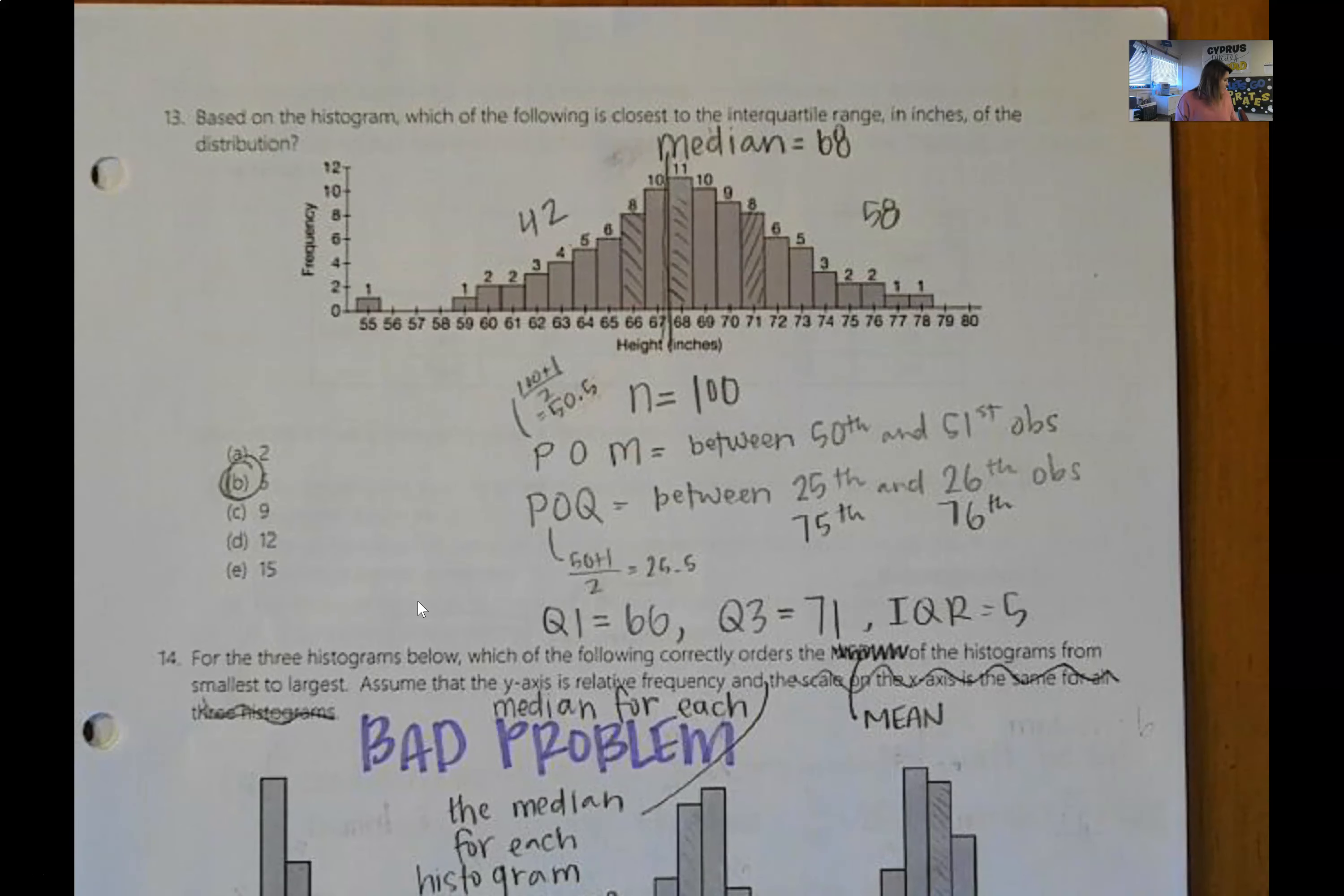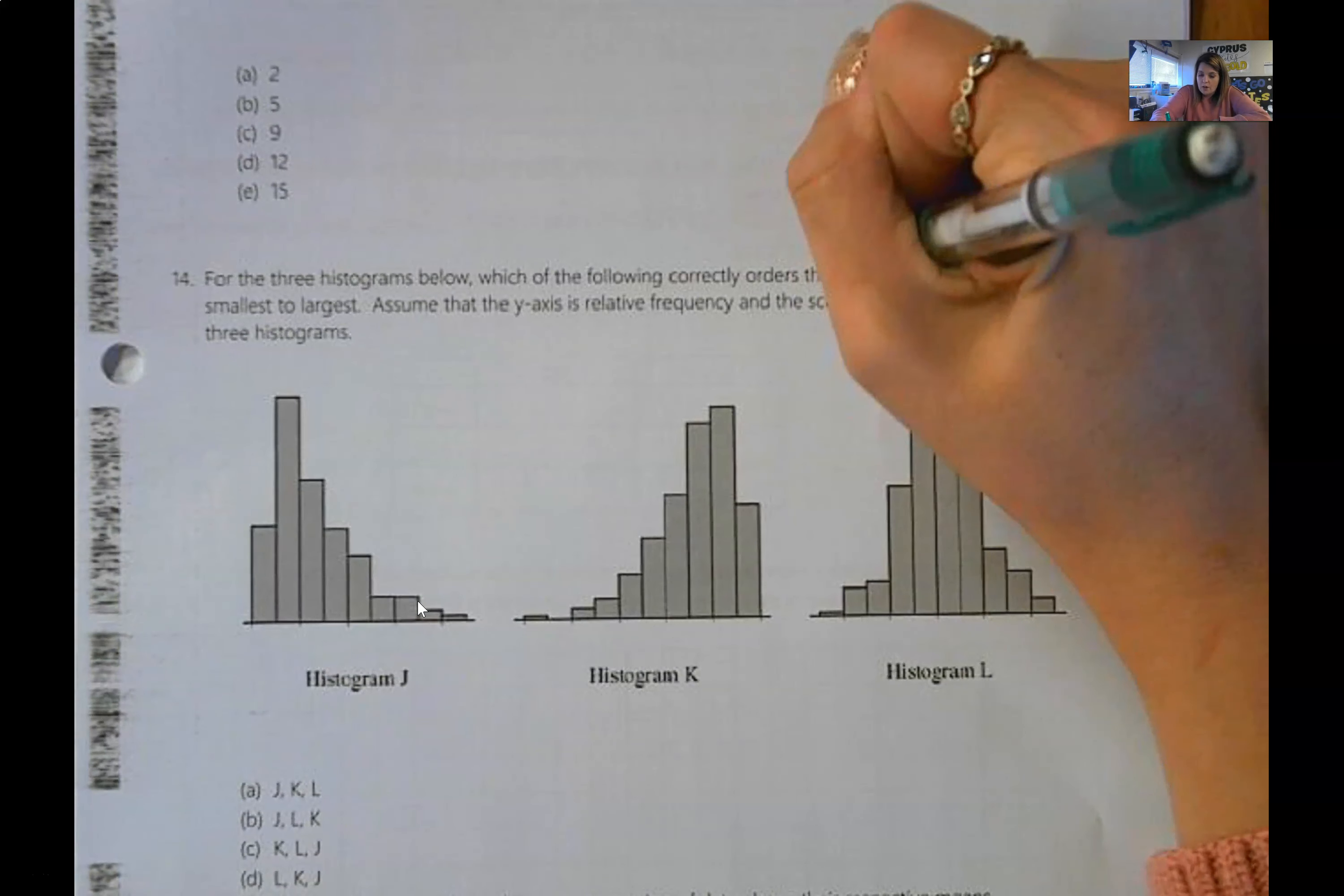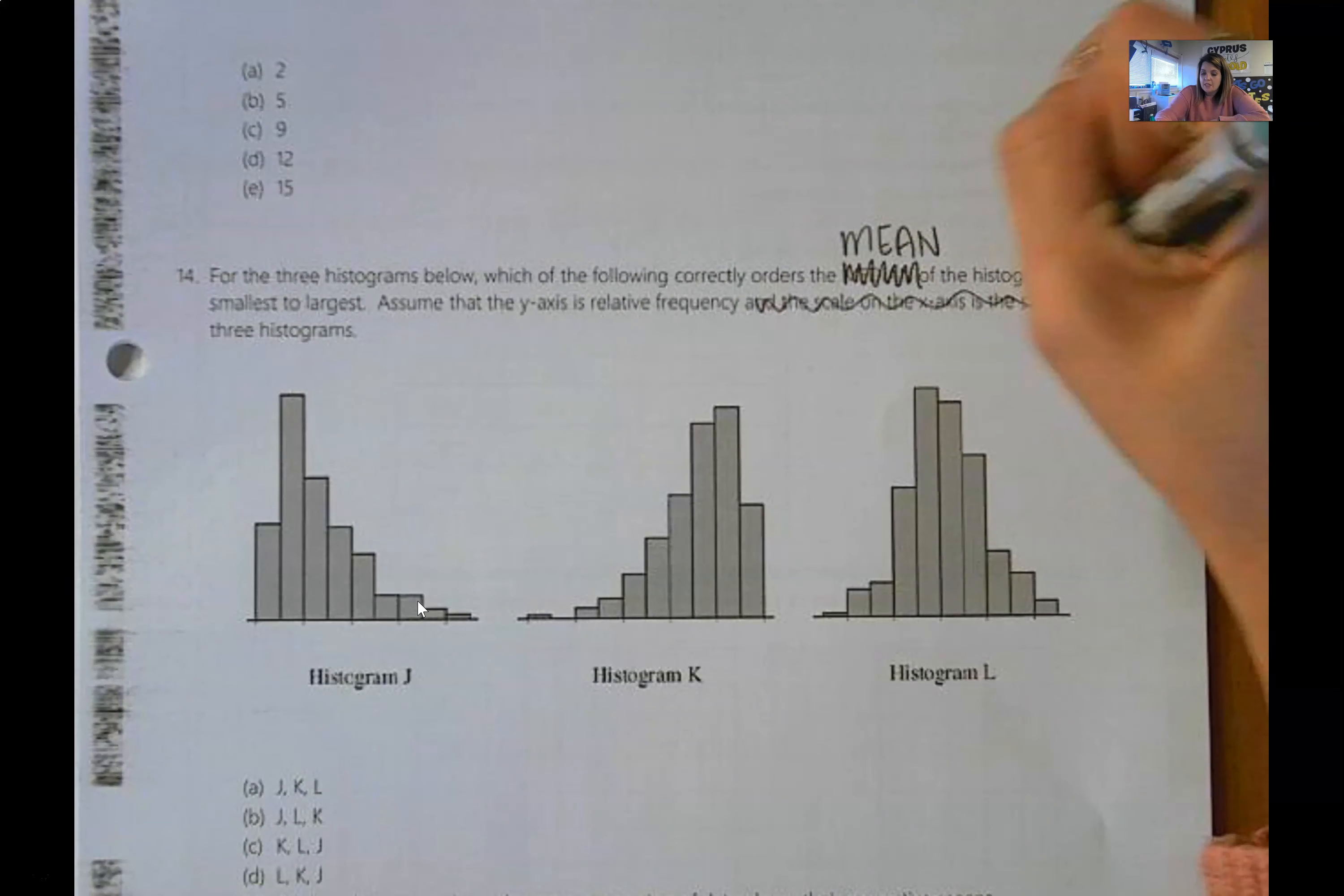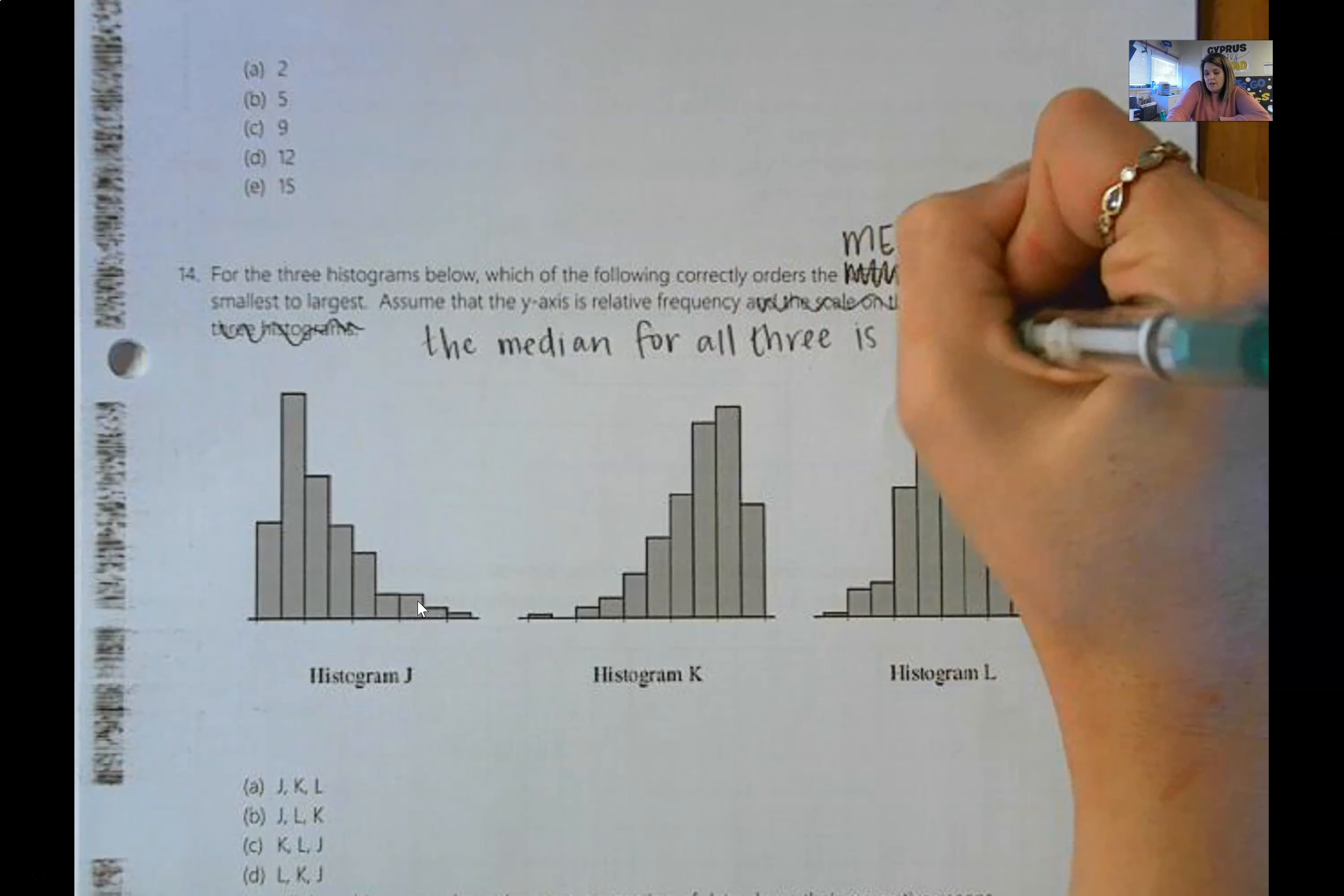Number 20 is the problem is written poorly. So I'm going to fix it for you. And by 20, I think I meant 14. Okay, so the for the three histograms below, which of the following correctly orders? I want you to change this to mean of the histograms from smallest to largest. Assume that the y axis is relative frequency and the median for all three is the same.